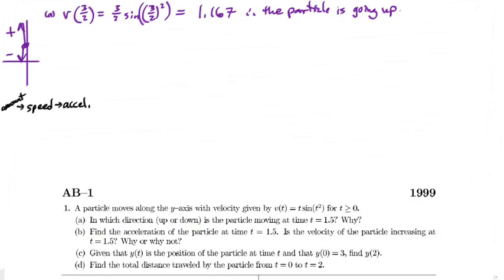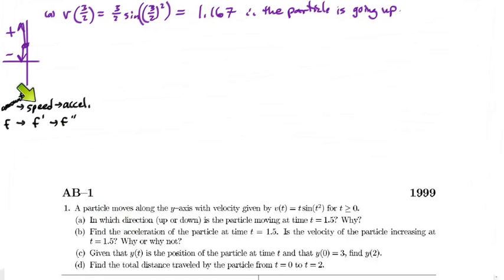I say amount because it applies to more than one problem, but it would be considered distance. Velocity is your f prime, acceleration is your f double prime, and position is your f. Right now we're at velocity — that's the f prime spot. If we want to find acceleration, we just have to take the derivative once more to get the double prime.